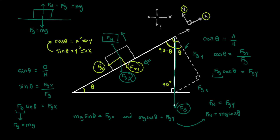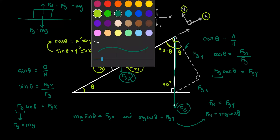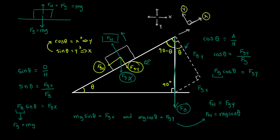This is also what we often see in an expression for friction, because the force of friction equals mu times Fn. In this case, that means friction equals mu times mg cos theta.